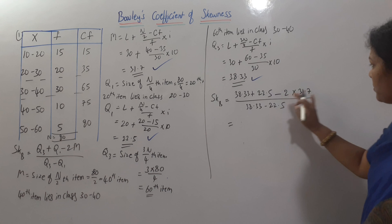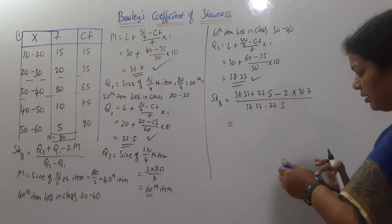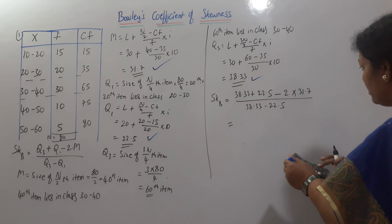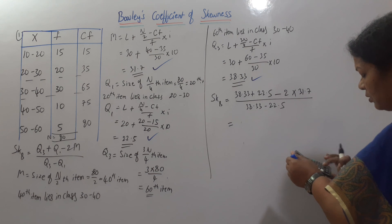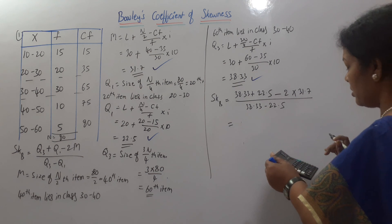Simple calculations. First, we will multiply this, 31.7 into 2, 63.4.